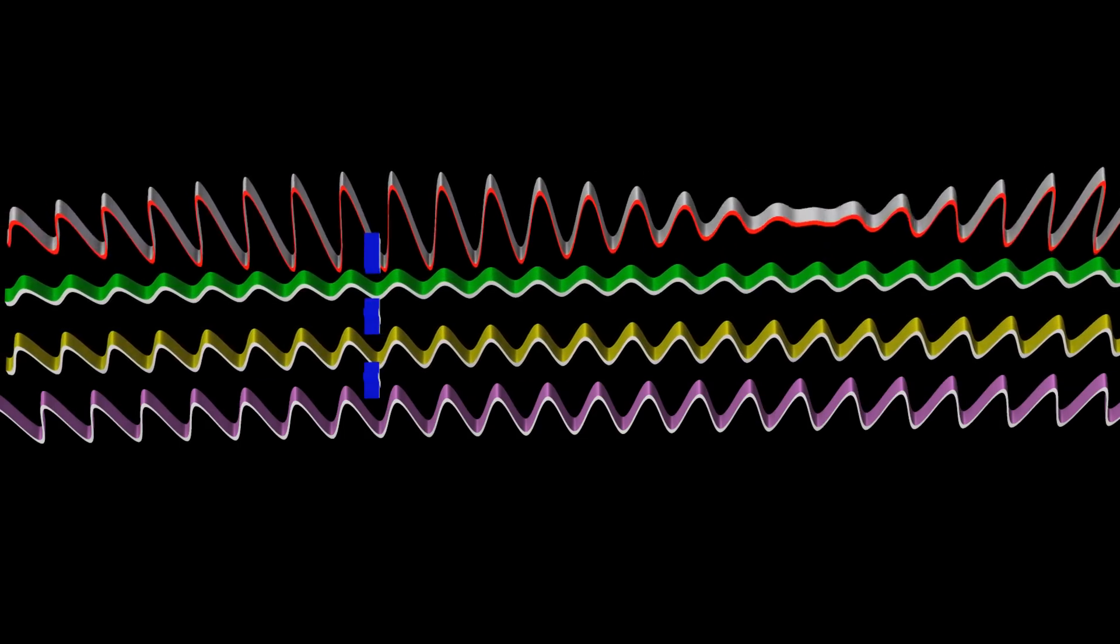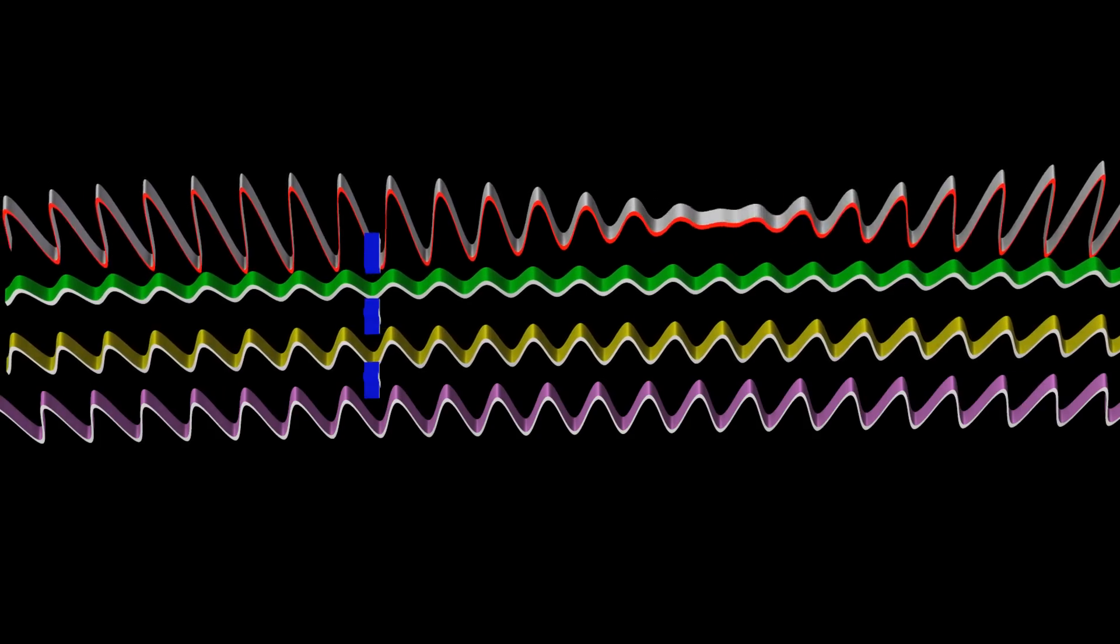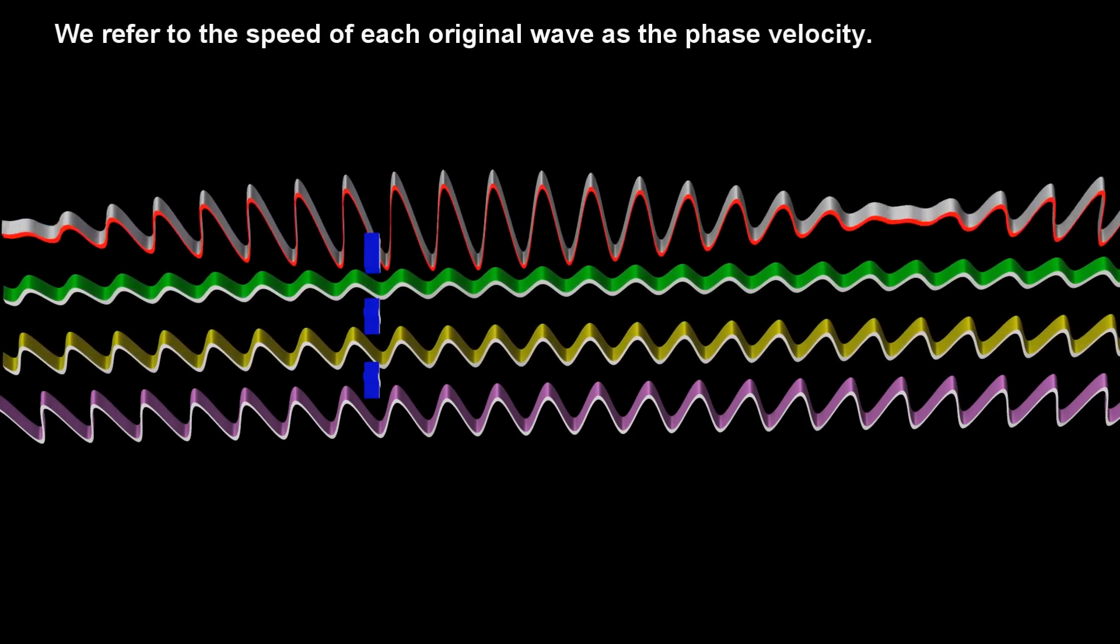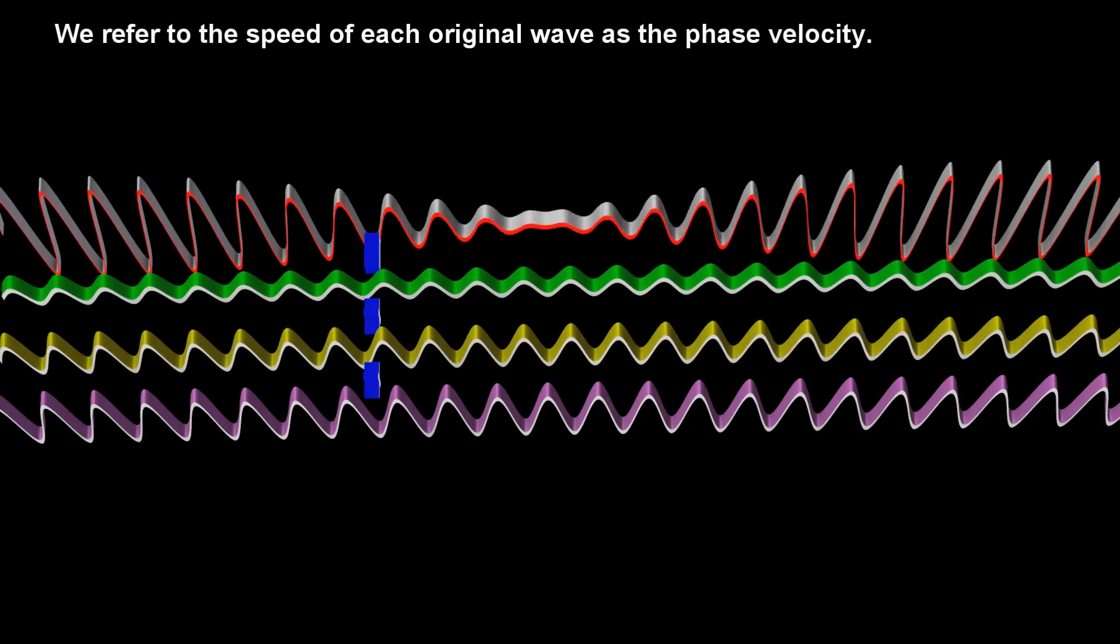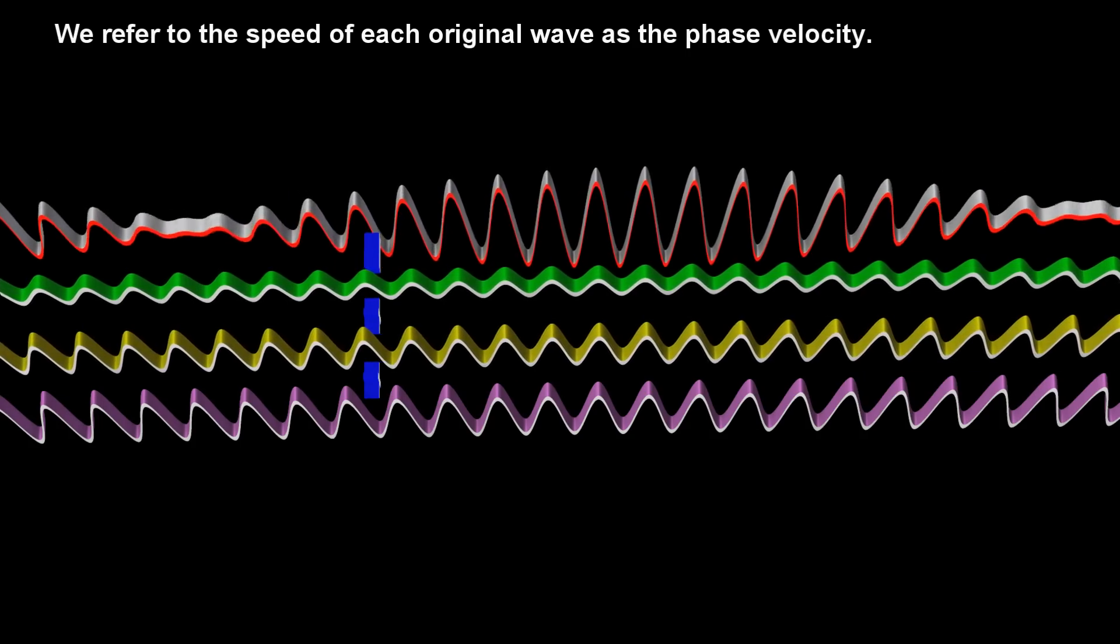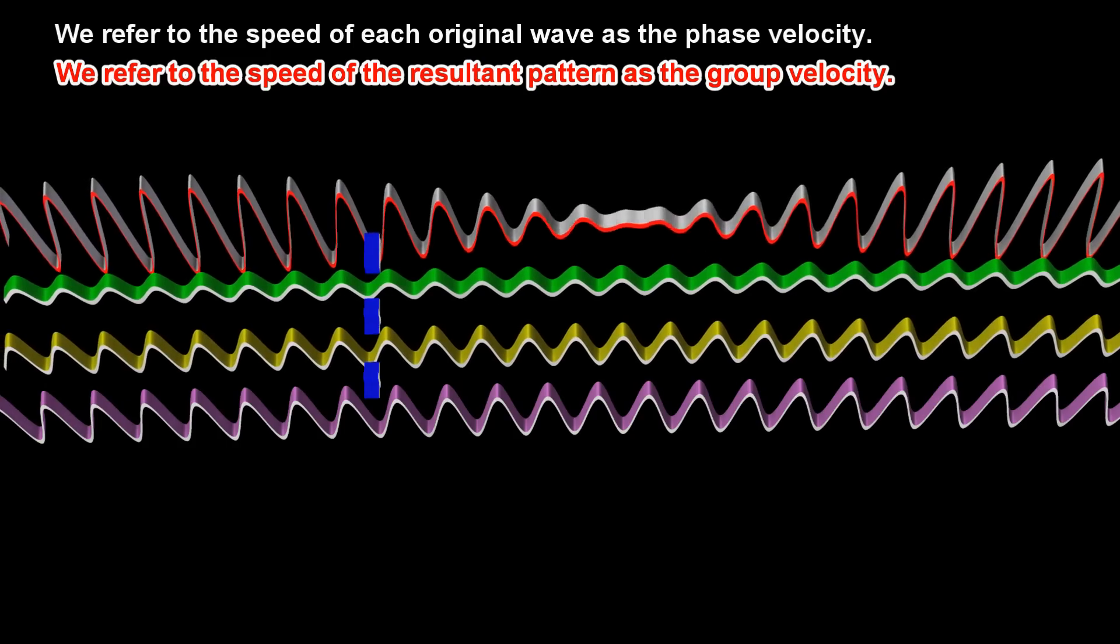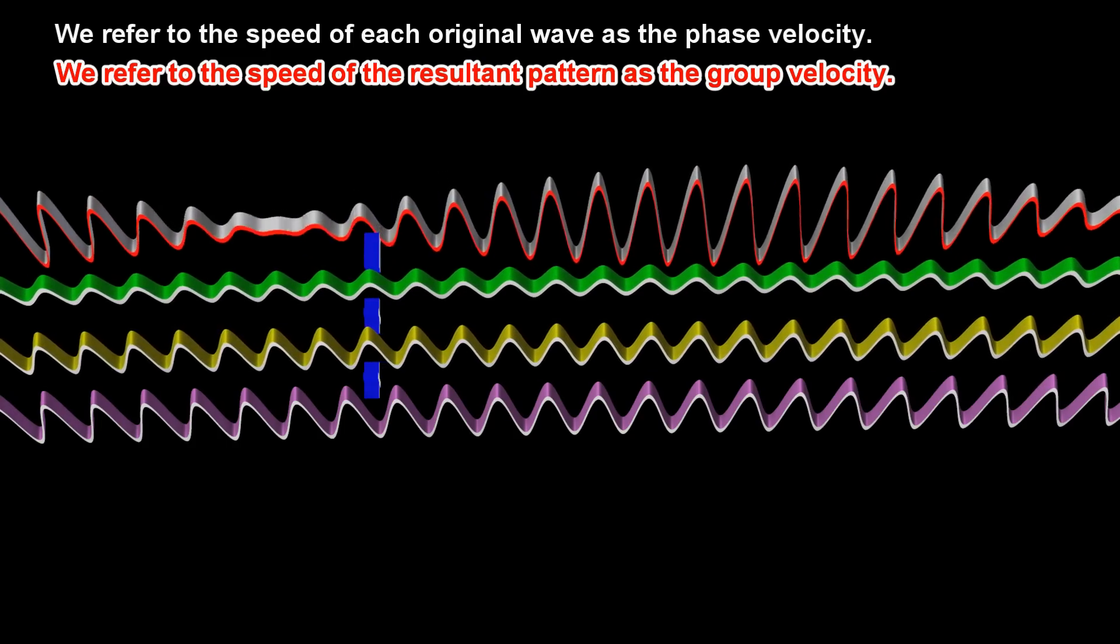The resultant pattern moves at a different speed than the original waves. We refer to the speed of each original wave as the phase velocity. We refer to the speed of the resultant pattern as the group velocity.